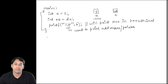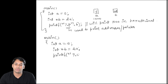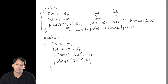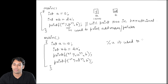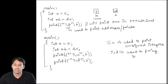Now instead of %p, we can also use %d or %u. Consider this program: main, int a is equal to 5, int star b is equal to address of a, and then printf %u, b, and then printf %d, b. Now %u is used to print unsigned integers and %d is used to print signed integers.